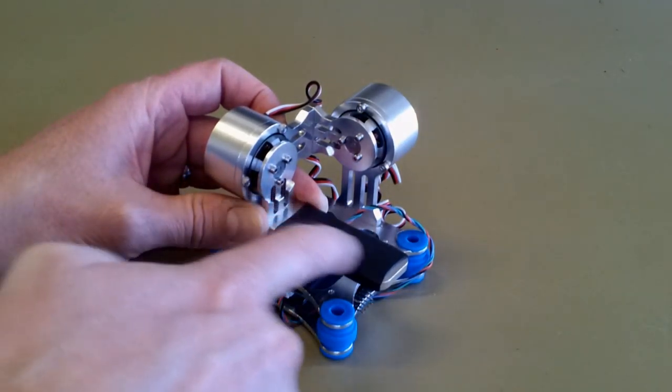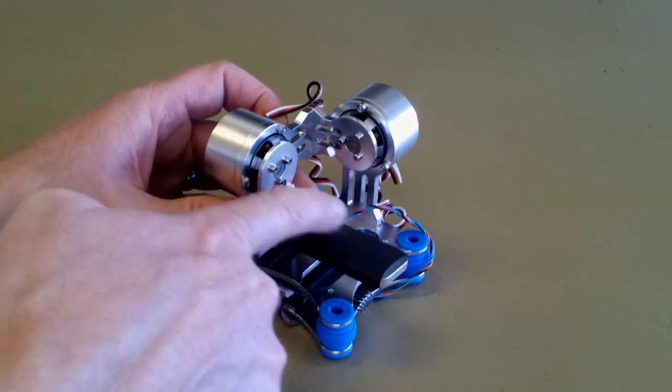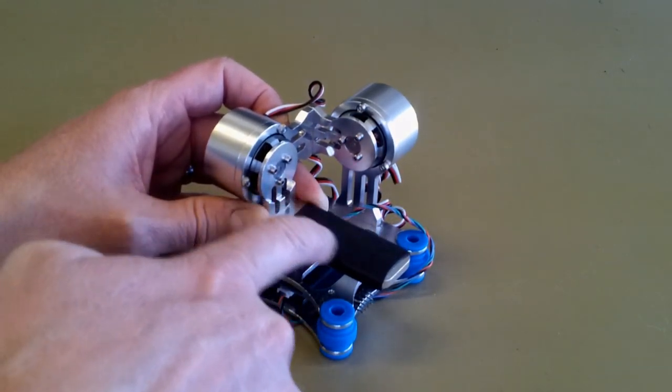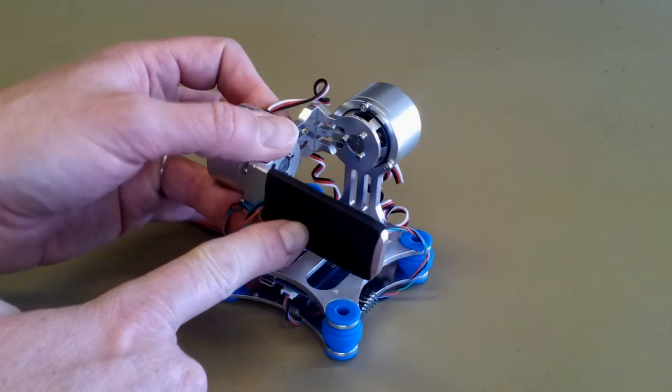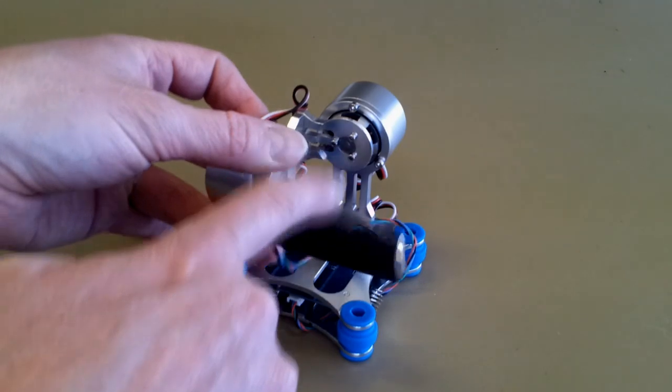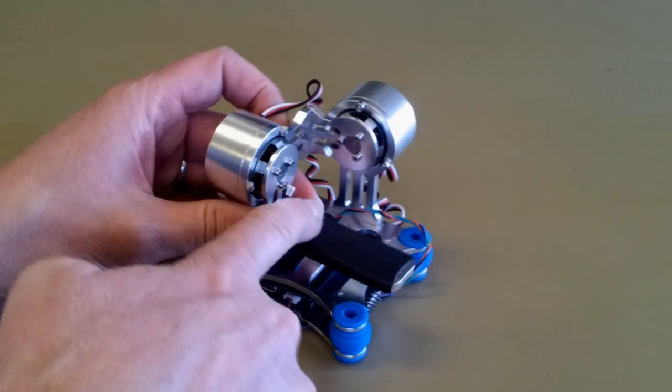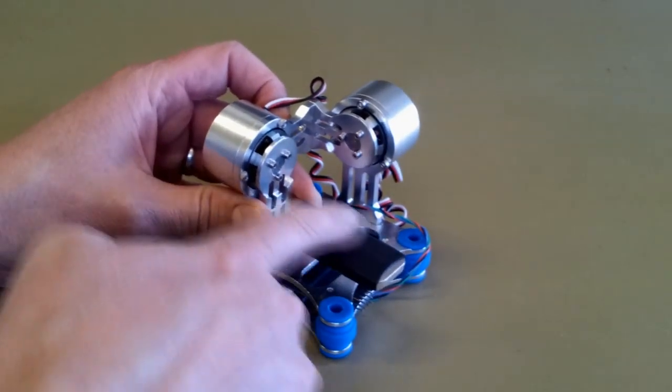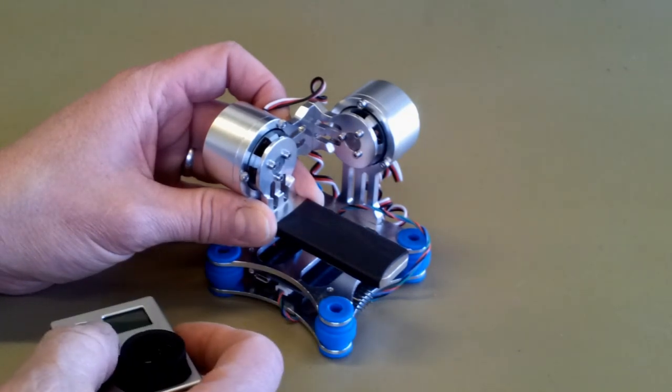This black heat shrink actually serves two purposes. Firstly it holds the controller sensor, and also it acts as a quite nifty non-slip surface for the GoPro to sit on.